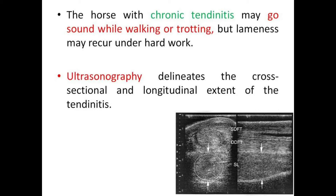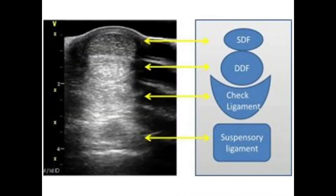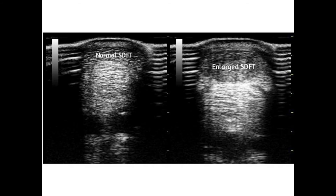Ultrasonography is the main diagnostic method, which delineates the cross-sectional and longitudinal extent of the tendon. You can see the cross-sectional and longitudinal views here. In the cross-sectional view, you can see the different tendons: the superficial digital flexor, deep digital flexor, check ligament, and suspensory ligament. This picture shows a normal superficial digital flexor tendon on one side and an enlarged bow tendon — the enlarged superficial digital flexor tendon — on the other side.